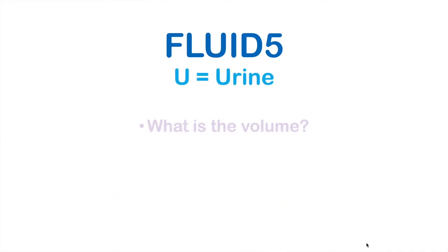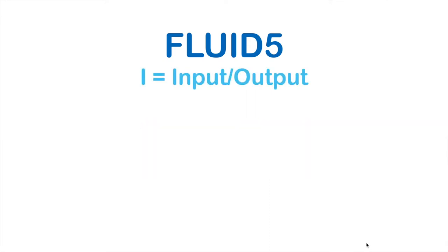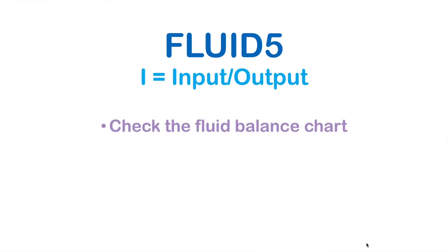U is for urine. What is the volume? What is the colour? The lower the volume and the darker the colour, the higher the likelihood of dehydration.